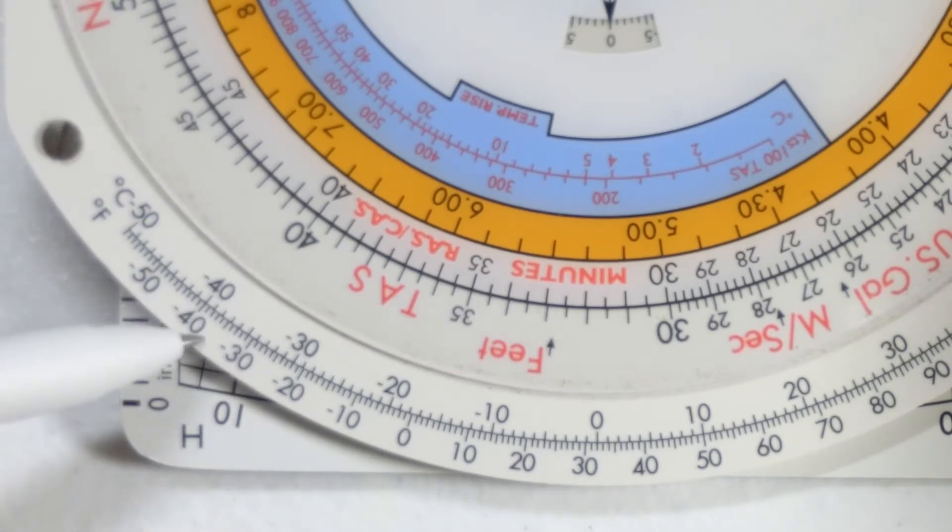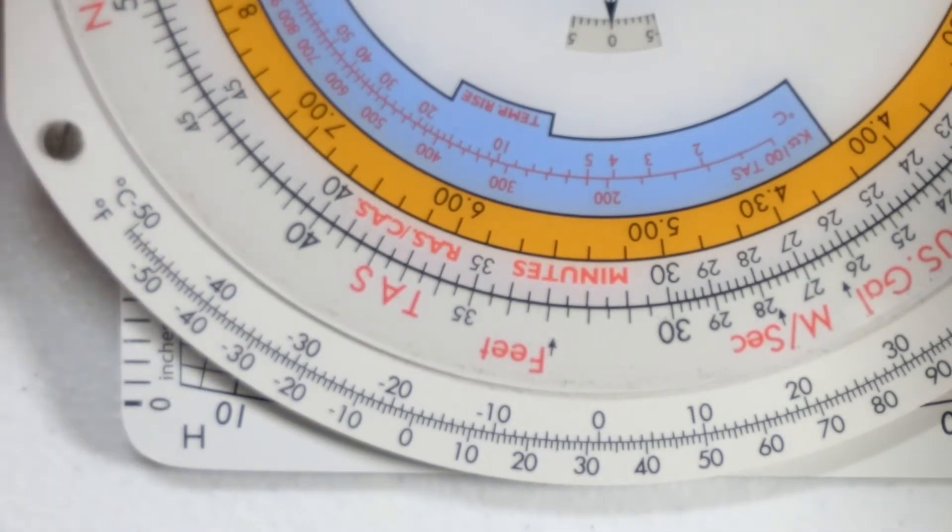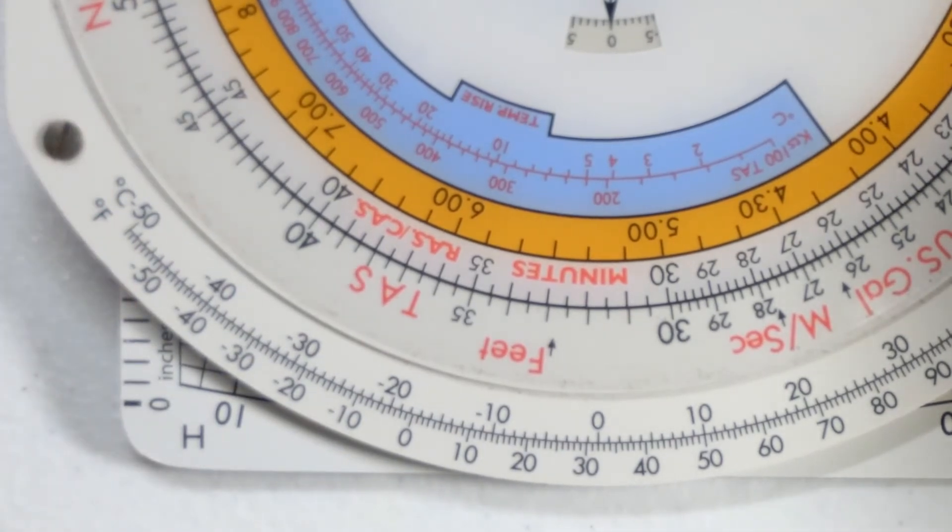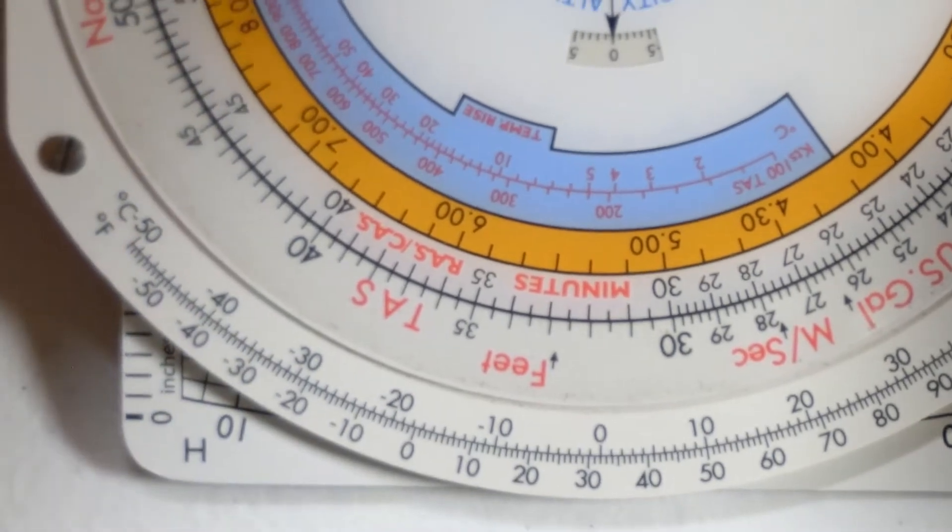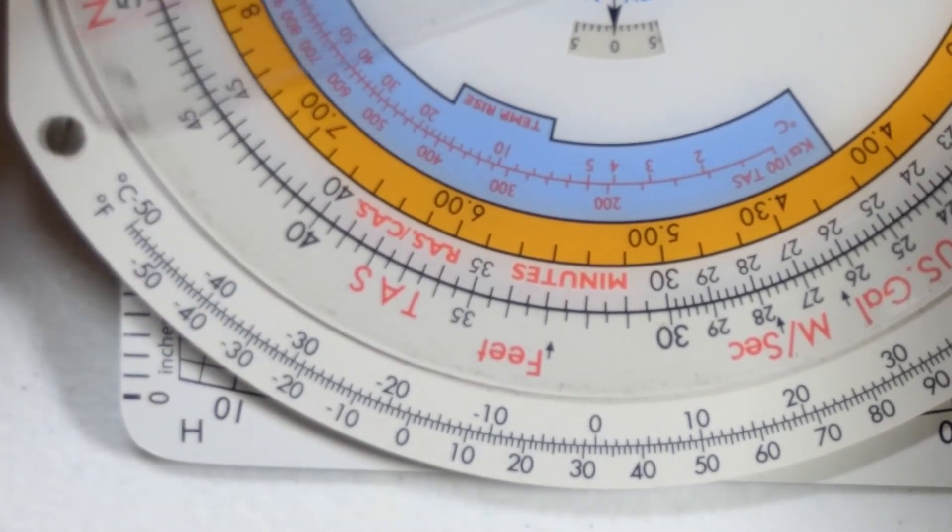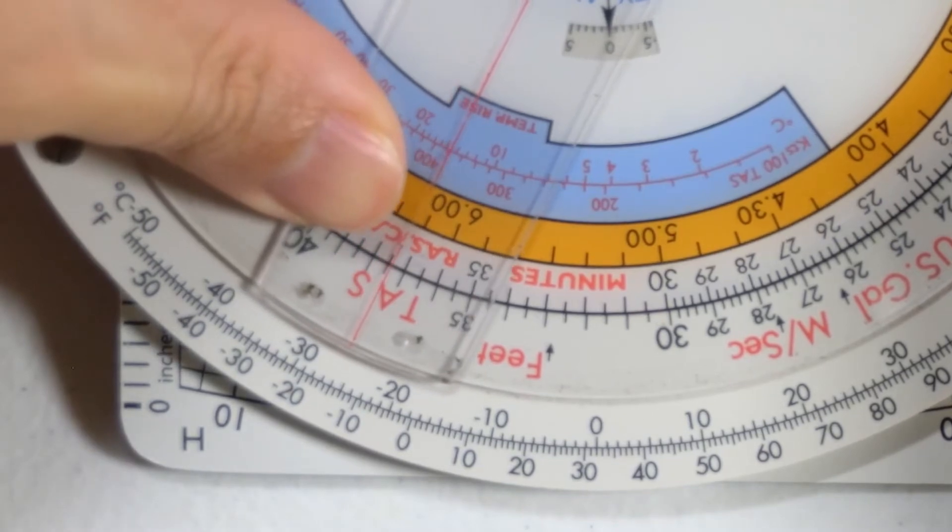This is a fixed scale so all you need to do to convert, let's say, 35 degrees Celsius into Fahrenheit would be to move the cursor to line up with 35 degrees Celsius.